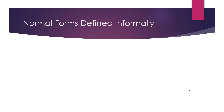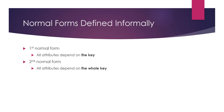Let's recap these normal forms informally. A relation is in the first normal form if all attributes depend on the key — no multivalued, composite, or nested relations. A relation is in the second normal form if all attributes depend on the whole key, not just parts of it. A relation is in the third normal form if attributes depend on nothing but the key — no transitive dependencies, only direct dependence on the key and not on other non-candidate-key attributes.